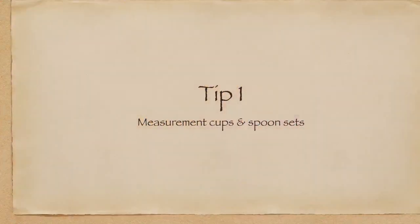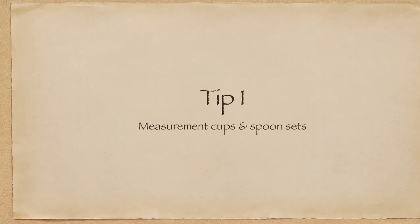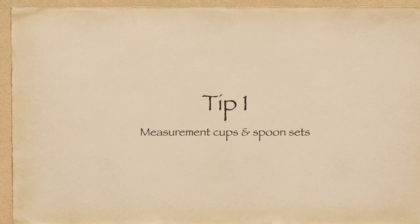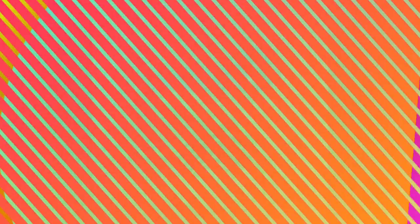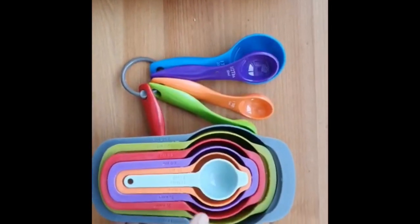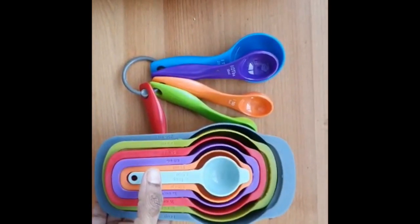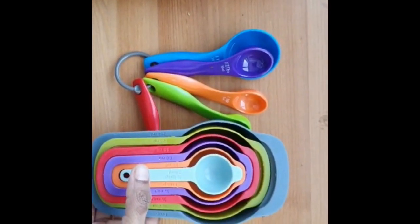So let's see what all things we need to have in our kitchen before beginning a recipe. Let's see the first item. For all recipes, measurement is very crucial, and for that we need measuring spoons and cups, right?